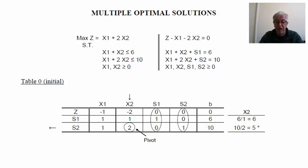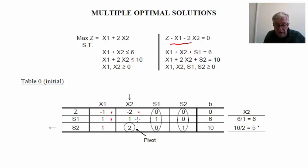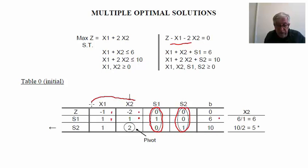We build the initial simplex table and analyze it. We have the coefficients of z: minus 1 and minus 2 for x1 and x2. The coefficients of the first restriction are 1, 1, and 1, with independent term 6. Similarly, we obtain the coefficients for the second restriction. We can extract an initial solution by identifying the basic variables s1 and s2, and setting the non-basic variables to zero: z equal to 0, S1 equal to 6, and S2 equal to 10.